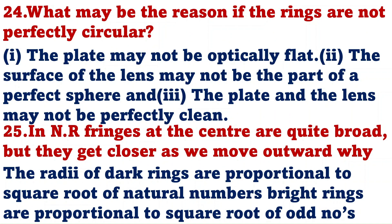What may be the reason if the rings are not perfectly circular? There are three points if the rings are not circular. First, the plate may not be optically flat. Second, the surface of the lens may not be part of perfect sphere. Third, the plate and the lens may not be perfectly clean.